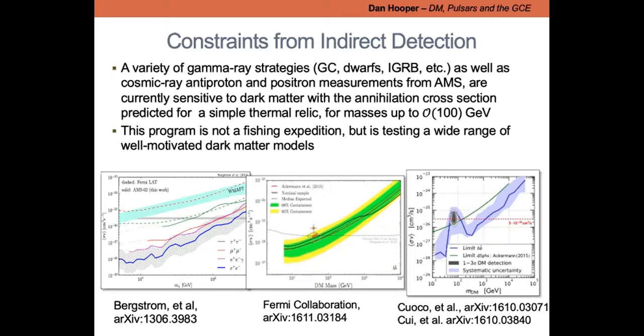In the lower left frame I have constraints for leptonically annihilating dark matter using AMS positron measurements, going up to a couple hundred GeV for e⁺e⁻. In the middle are the Fermi collaboration's constraints from dwarf galaxy observations, going up to several tens of GeV for hadronically annihilating dark matter. On the right are constraints from the antiproton spectrum measured by AMS. With the exception of an excess at 50–100 GeV which I'll return to, we can rule out the thermal relic cross section up to masses of about a TeV. These experiments are really teaching us about WIMPs in a decisive way.